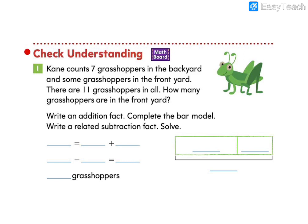Let's look at the check understanding problem. It says, Kane counts seven grasshoppers in the backyard and some grasshoppers in the front yard. There are 11 grasshoppers in all. How many grasshoppers are in the front yard?